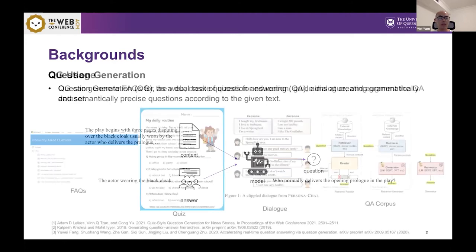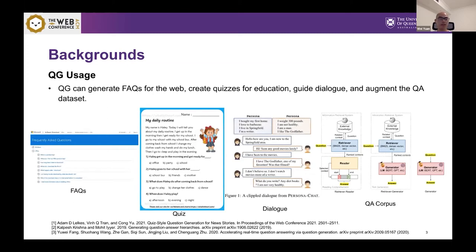QG has many real-life applications like it can generate frequent asked questions for websites and it can create quizzes for education materials. It can also guide dialogue for example in task-oriented dialogue systems. The system usually grasps users intent through asking questions so we can generate such questions and it can also be an augmentation technique for question answering to augment QA datasets.